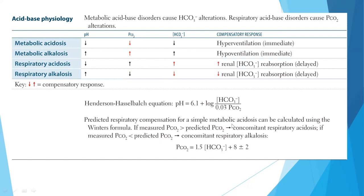The predicted respiratory compensation for simple metabolic acidosis can be calculated using Winter's formula. If the measured pCO2 is more than the predicted pCO2, then there is concomitant respiratory acidosis. The predicted pCO2 represents the expected simple compensation — if bicarbonate decreases, there is a predicted decrease in pCO2. If the calculated pCO2 is higher than predicted, it indicates that pCO2 is also rising from another source, meaning there is a mixed acid-base disorder.